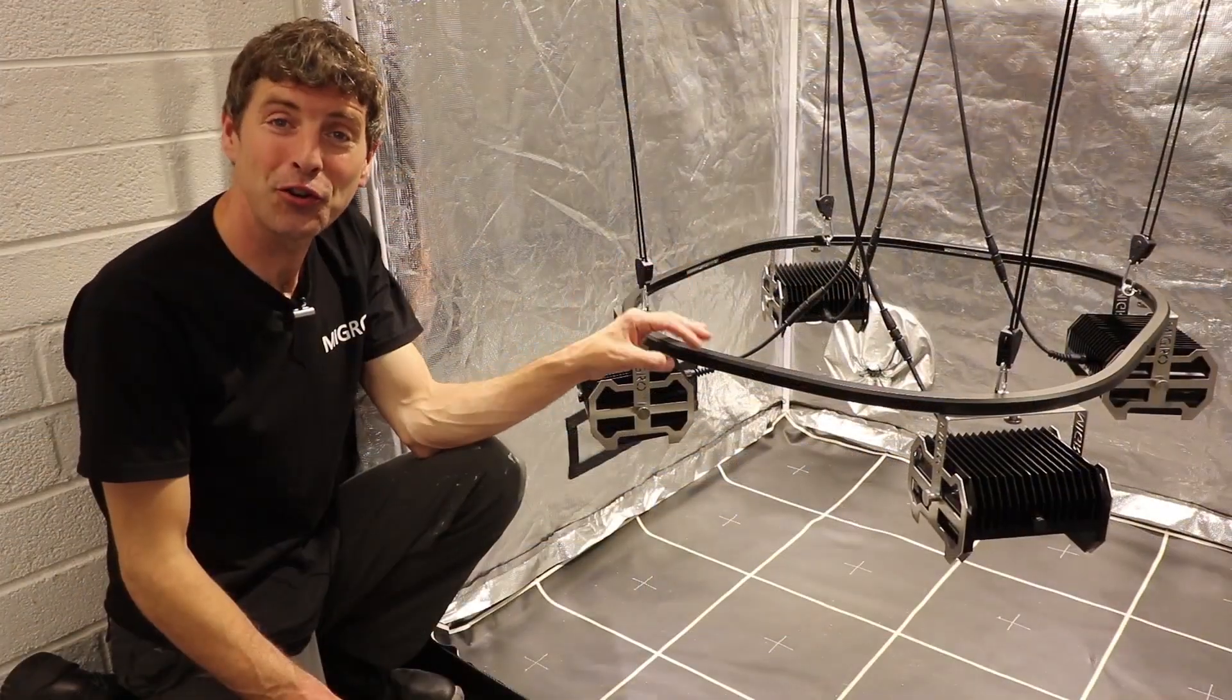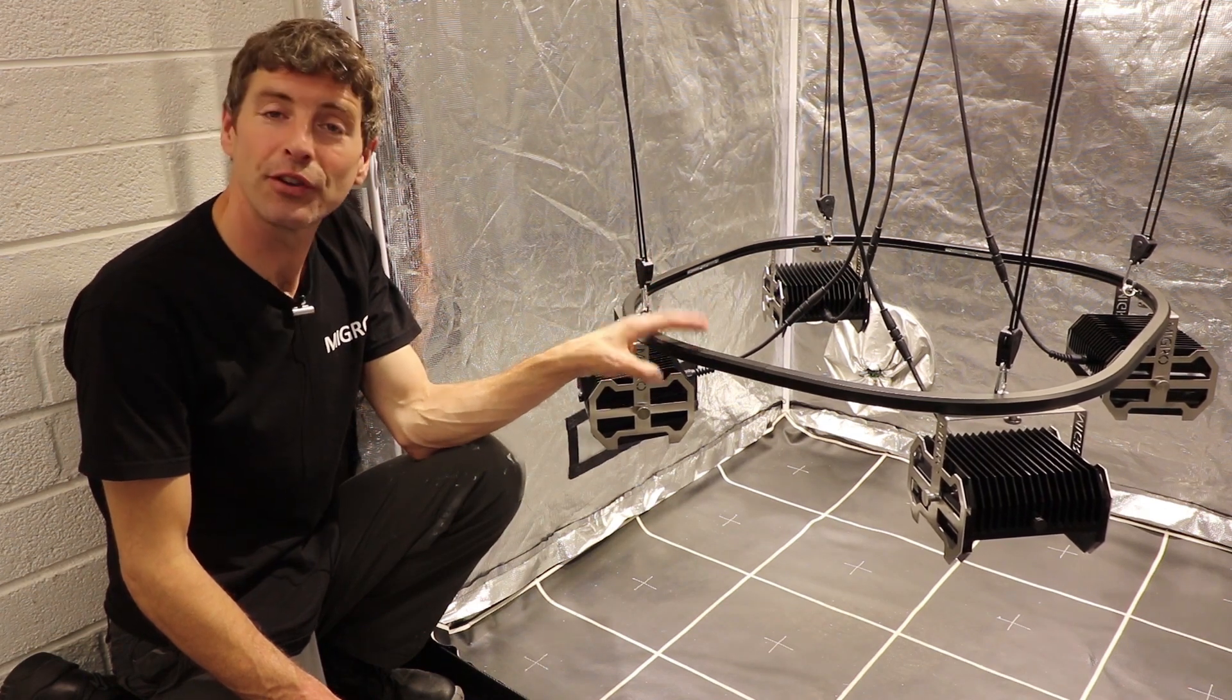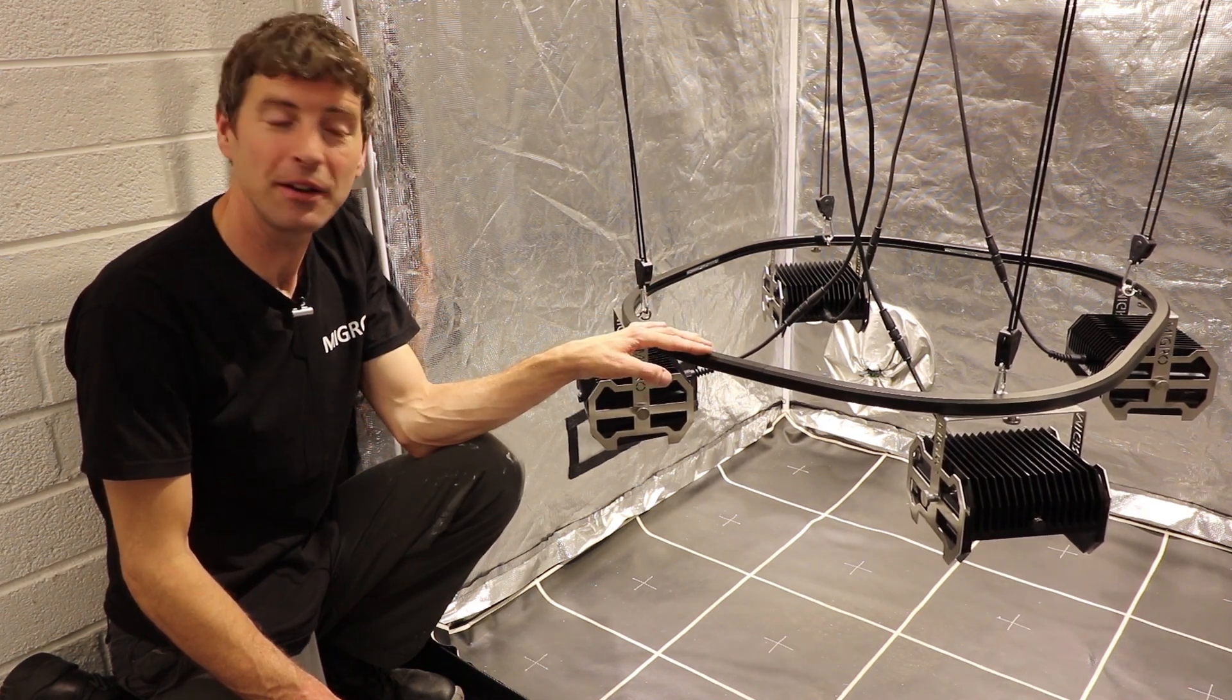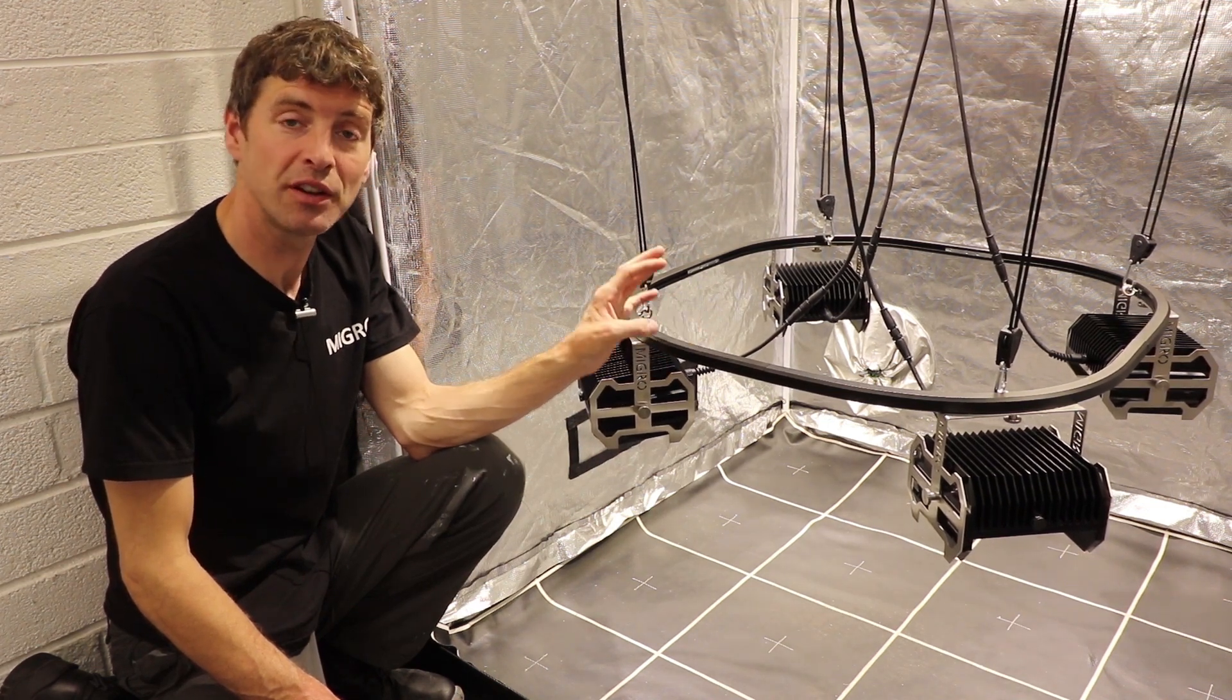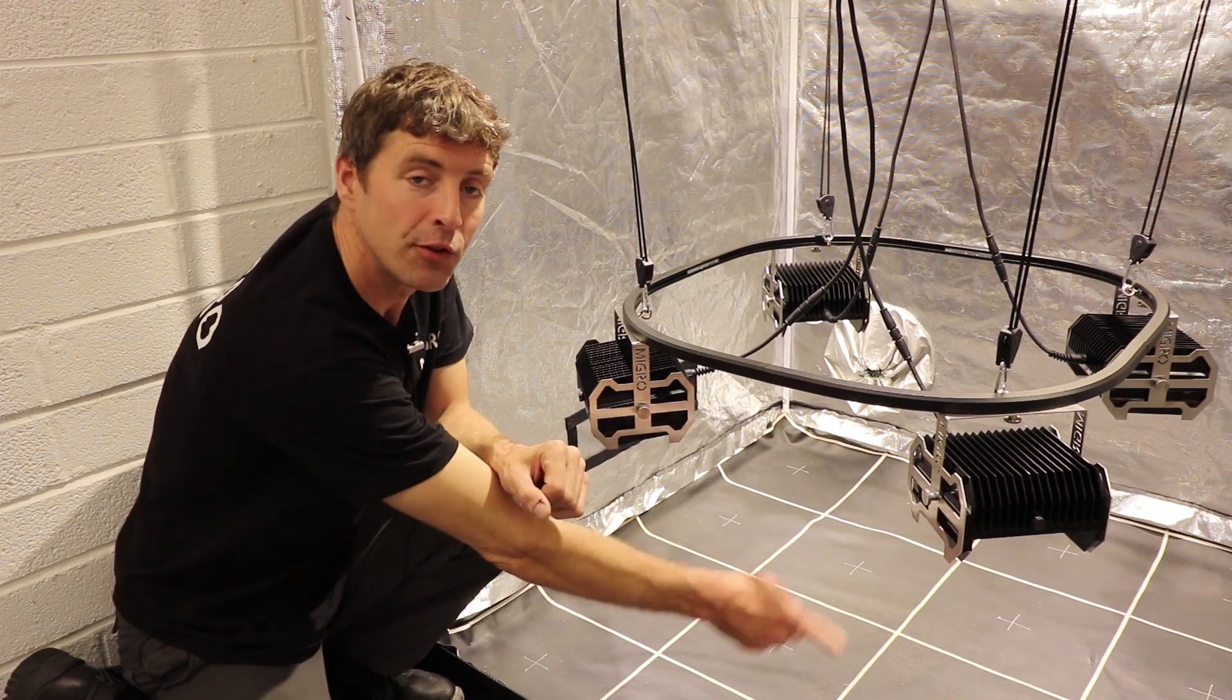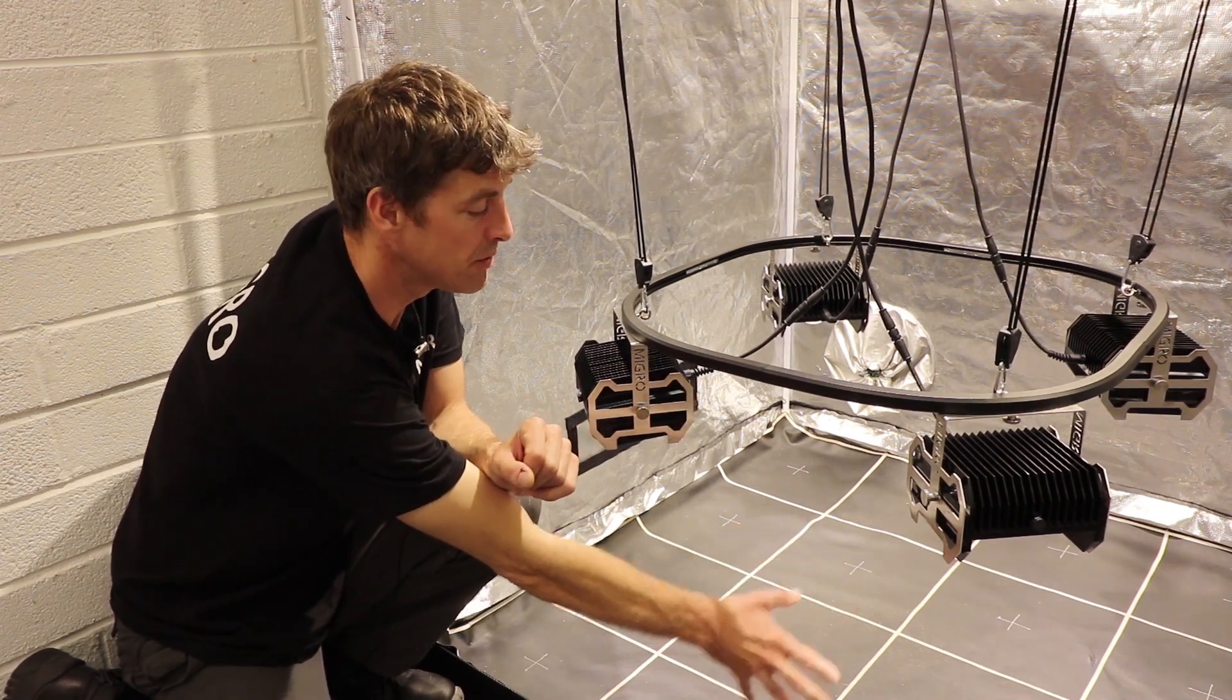Now the MIGRO 400 is fully assembled and adjusted and set up for this 1.2 by 1.2 meter tent. The hanging height for best light distribution in this setup is about 40 cm or 16-18 inches above the grow area.